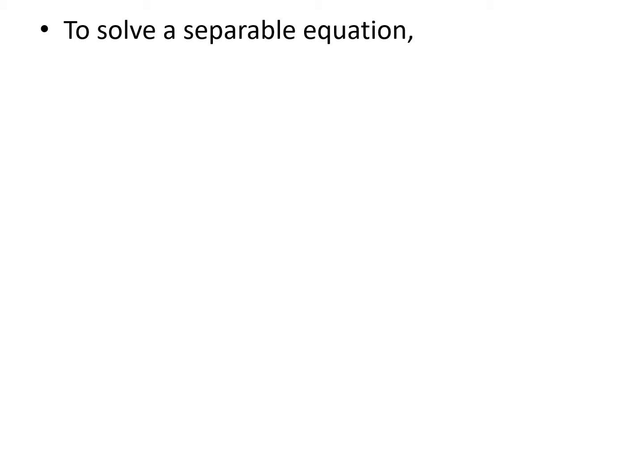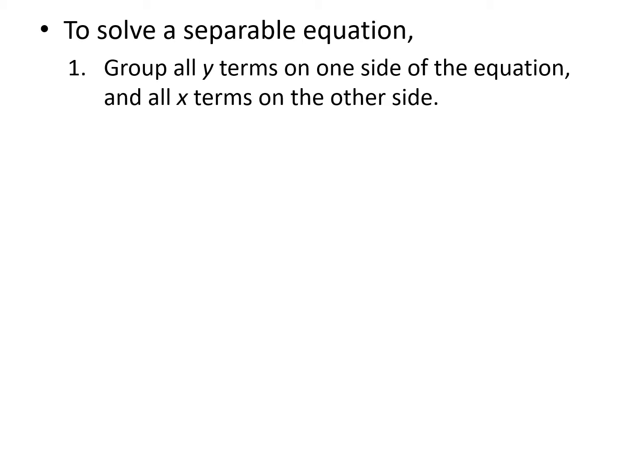So if you have a separable equation, these are the steps that you'll take to solve it. First, you're going to group all of your y terms on one side of the equation and all of your x terms on the other side. It's important to note that your differentials, dx and dy, have to be in the numerator on their respective sides. So if you somehow wind up with dx or dy in a denominator, you're not going to be able to continue this method. If dx is on top of your derivative, it needs to stay on that side and you should move dy to the other side, or vice versa.